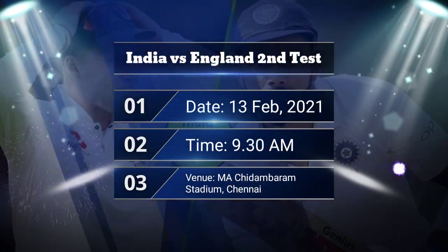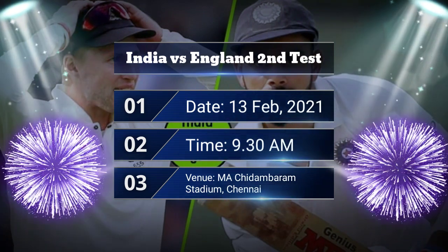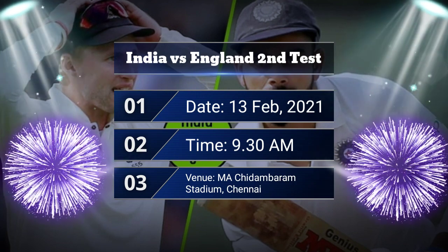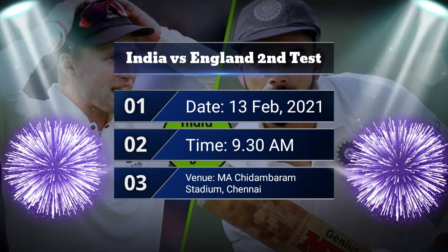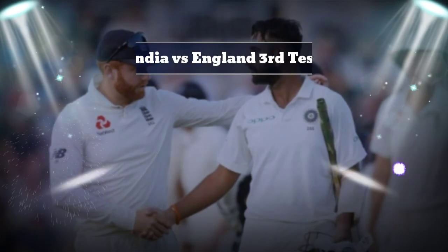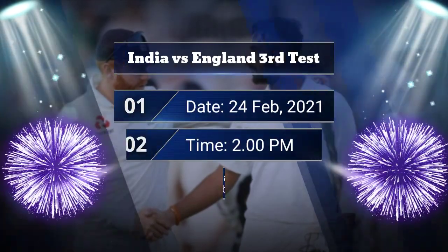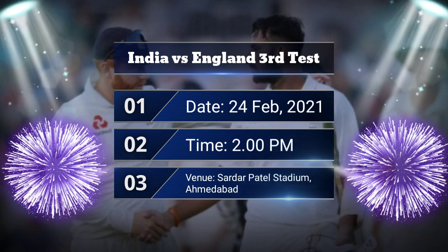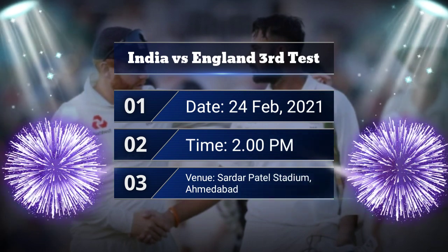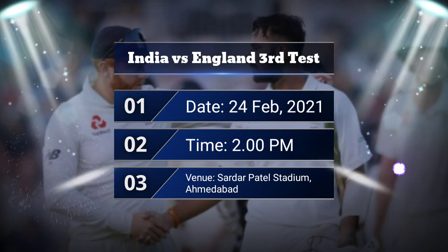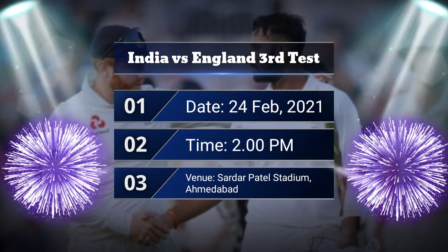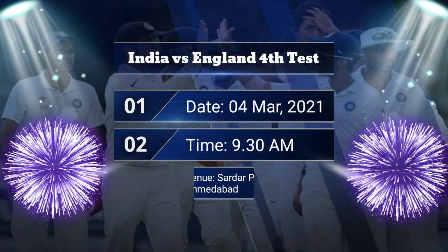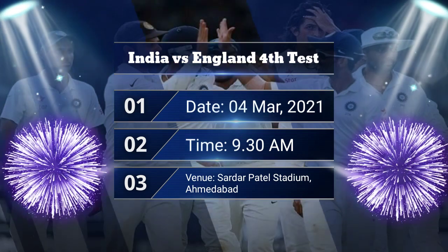India versus England second Test — date 13 February 2021, time 9:30 AM. India versus England third Test — date 24 February 2021, time 12 PM, venue Sardar Patel Stadium, Ahmedabad. India versus England fourth Test — date 4 March 2021, time 9:30 AM, venue Sardar Patel Cricket Stadium, Ahmedabad.